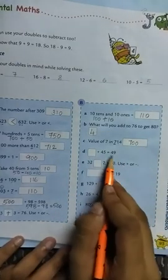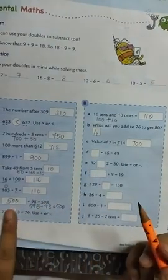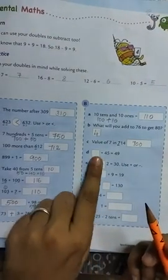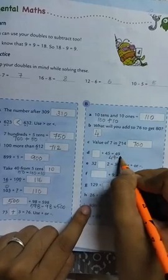Dash plus 45 is equal to 49. I have explained this question here also. If this number is missing in addition, what we will do? We will subtract. 49 minus 45.